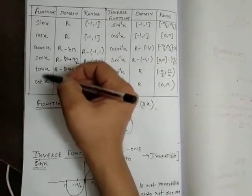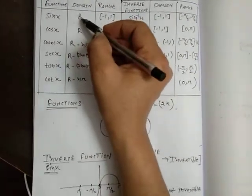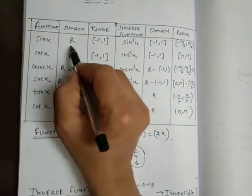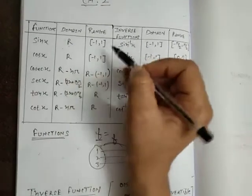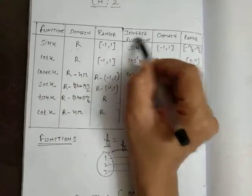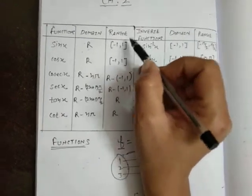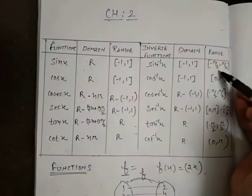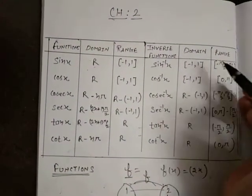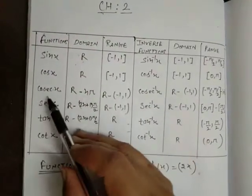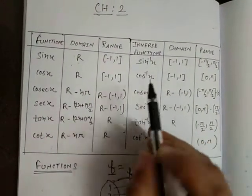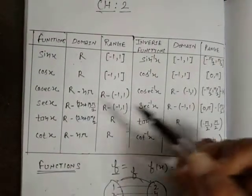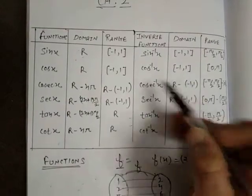These are all our trigonometric functions. The domain is given as R and the range is minus 1 to 1 — everybody knows that the domain is R and range is [-1, 1]. In 12th class we learn about the inverse function. In inverse function, whatever was the domain becomes the range, and whatever was the range becomes the domain.